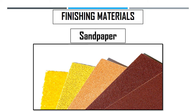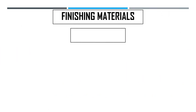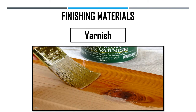The next finishing material is shellac, a resinous substance that comes from the excreta of the lac bug. It is a good adhesive for projects because it is easy to apply and dries fast. Next is varnish, one of the finest finishing materials for articles, and it can be spread thinly onto the project.